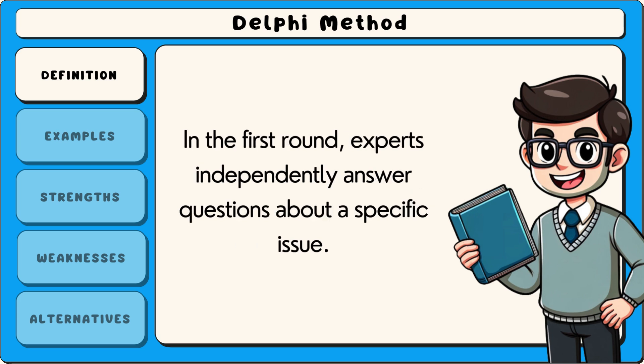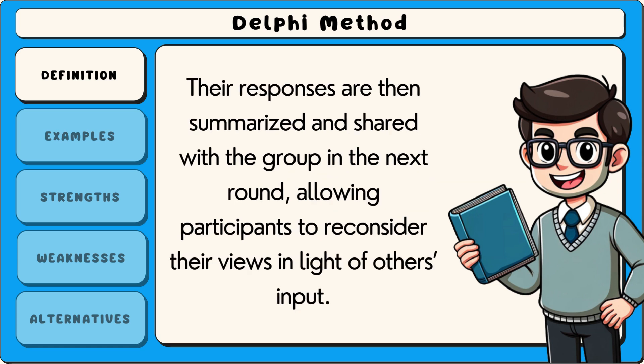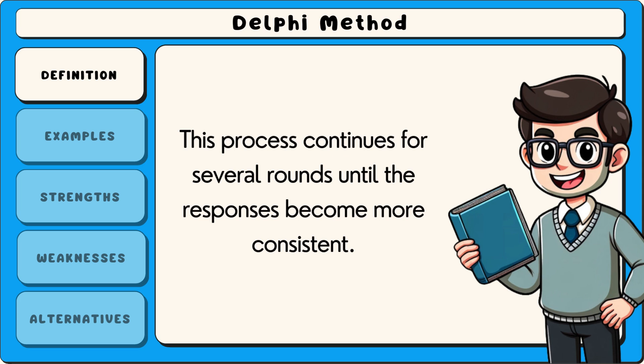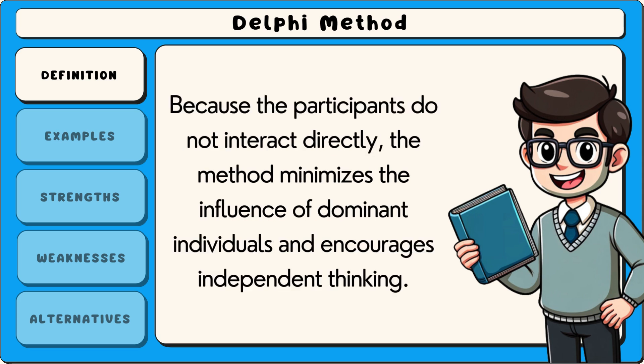In the first round, experts independently answer questions about a specific issue. Their responses are then summarised and shared with the group in the next round, allowing participants to reconsider their views in light of others' input. This process continues for several rounds until the responses become more consistent. Because the participants do not interact directly, the method minimises the influence of dominant individuals and encourages independent thinking.